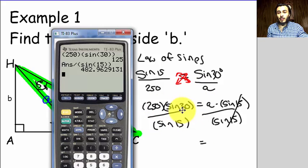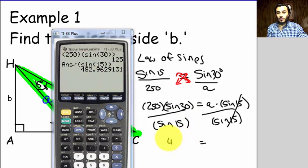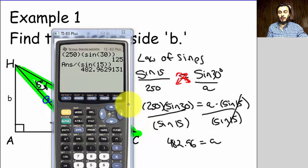So 250 times the sine of 30 divided by the sine of 15, I get approximately 482.96. So I'm gonna write that, so I get 482.96 is A.